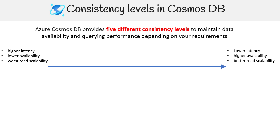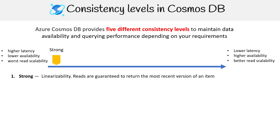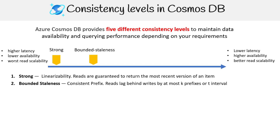Starting with the first one: strong consistency level. This is linear realizability — reads are guaranteed to return the most recent version of an item. Strong means a guarantee that what you read is what you get. But the latency is going to be higher, so it could be a bit slower. Then you have bounded staleness, which is a consistent prefix — reads lag behind writes by at most K prefixes or T intervals.